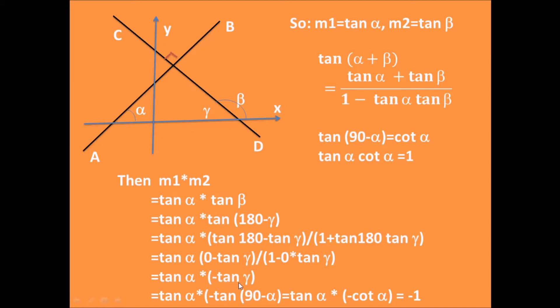As we know, the line AB and CD are perpendicular to each other, so α plus γ equals 90 degrees. Then, we can get m1 times m2 equals tangent α times minus tangent (90 - α) equals tangent α times minus cotangent α equals minus 1.